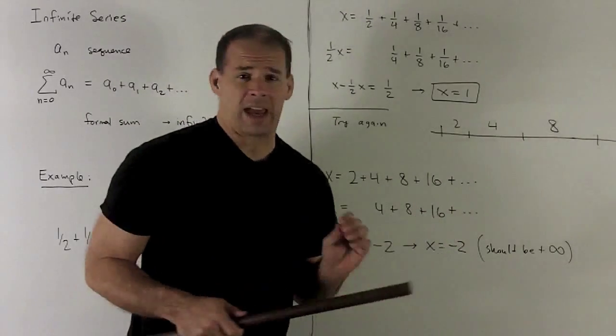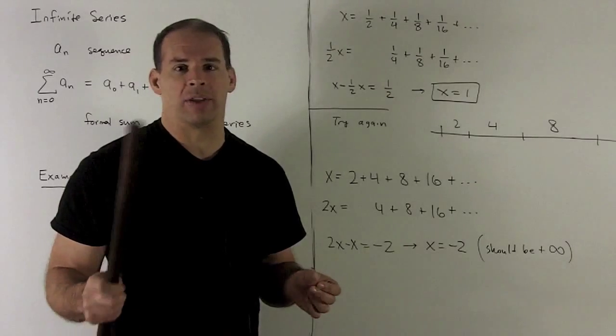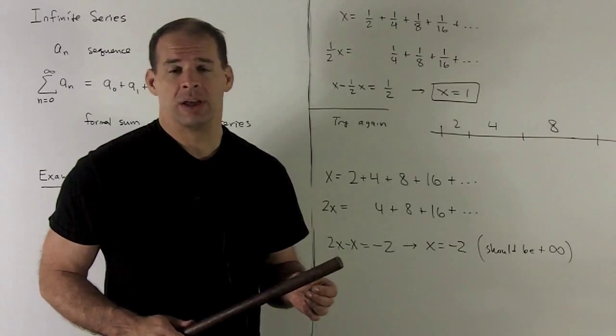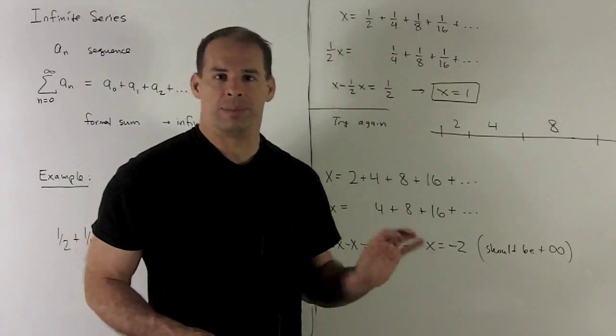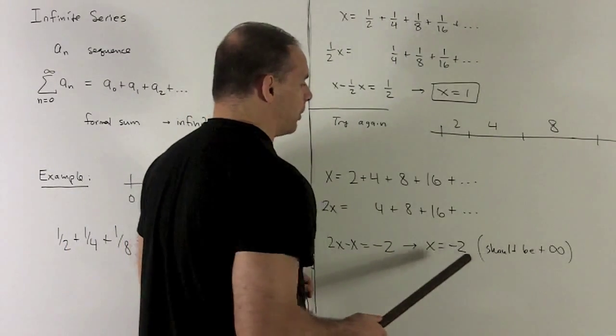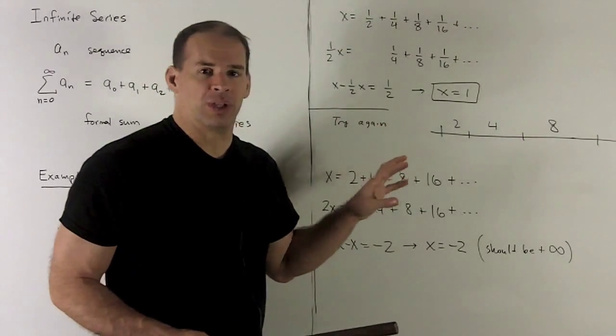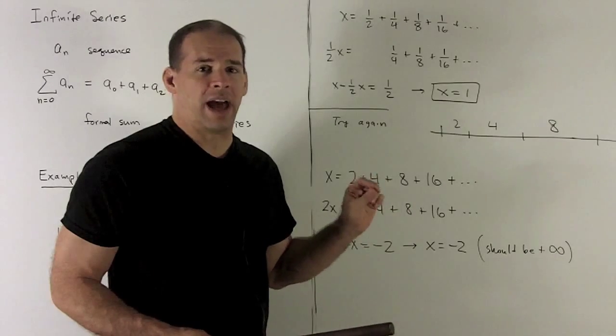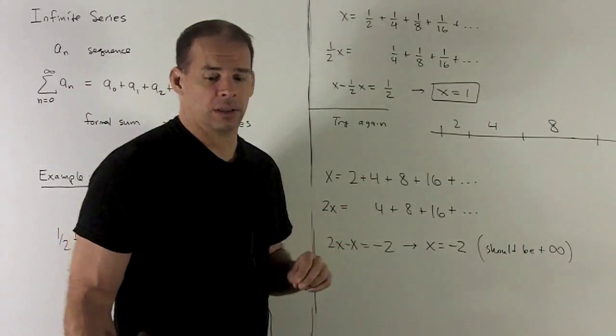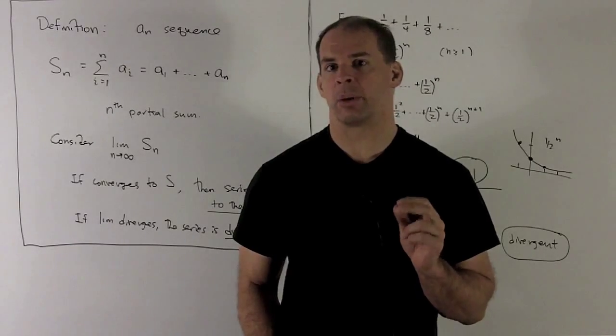Now, at no point did we add negative numbers here. So, the craziest thing that could happen is somehow we wrapped around the positive integers. But that definitely didn't happen. That's not how the integers work. So, it should be a plus infinity, but we're getting a minus 2, which tells me that the procedure that we're using is a little bit broken. So, we want to nail down what's happening here.